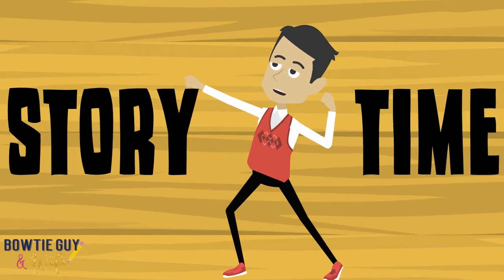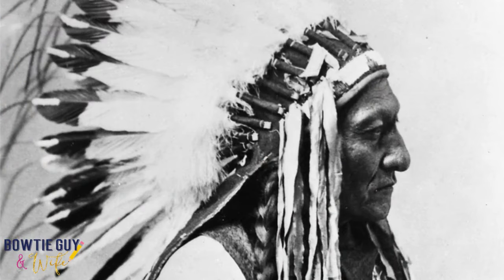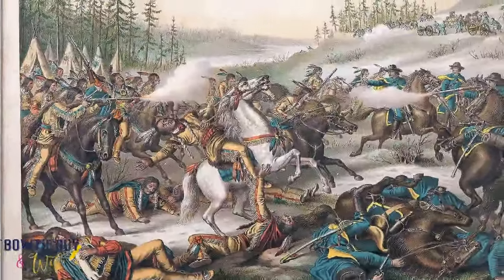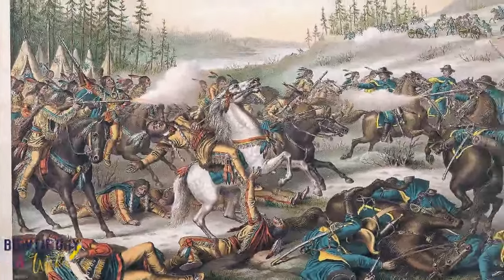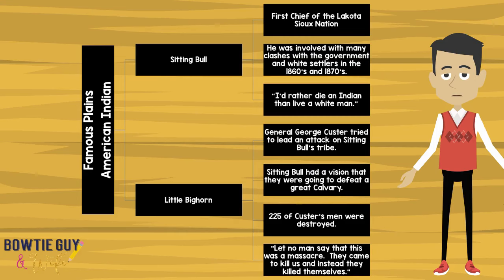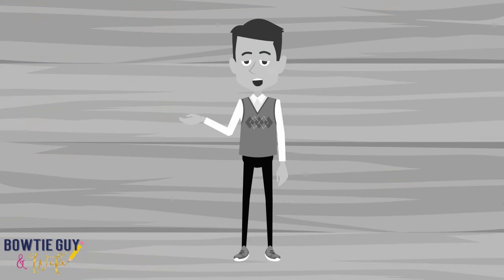It's story time! Today's story is about Sitting Bull, the first chief of the Lakota Sioux. He had many clashes with white settlers encroaching on his land in the 1860s and 1870s. He said, 'I'd rather die an Indian than live as a white man.' The U.S. government sent General George Custer to stop the clashes. Before Custer's arrival, Sitting Bull had a vision that he would conquer a great army — and that vision became reality. General George Custer and 225 soldiers were killed when they confronted Sitting Bull, in what history records as the Battle of Little Bighorn. Sitting Bull symbolized the quote: 'If you don't stand for something, you'll fall for anything,' and is a great representation of what made the American Indians of the Plains great.